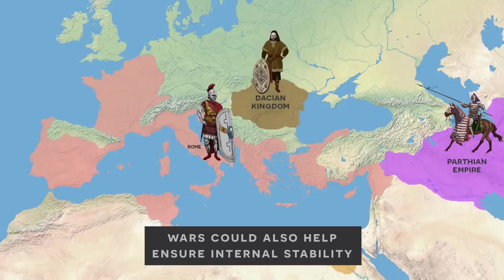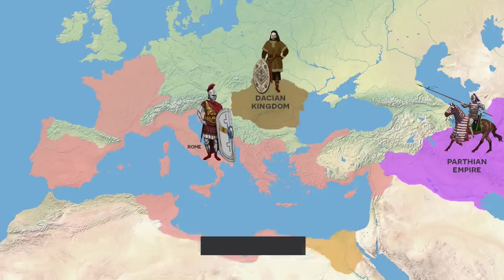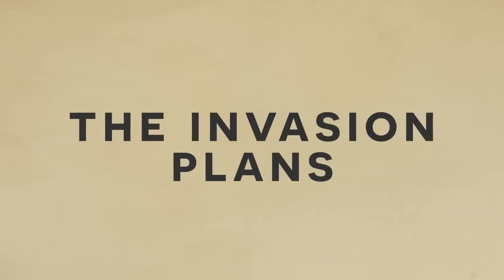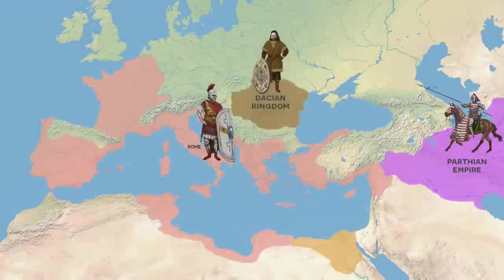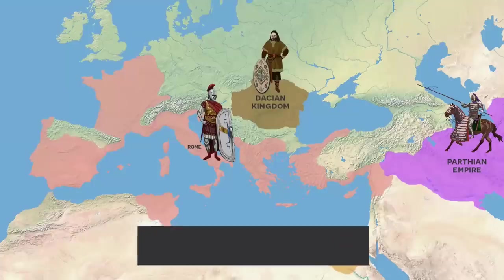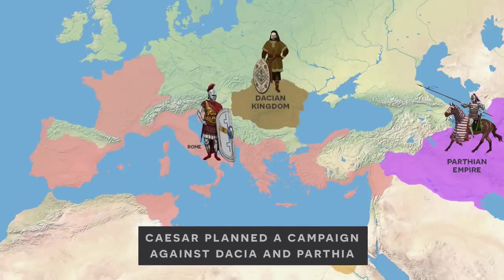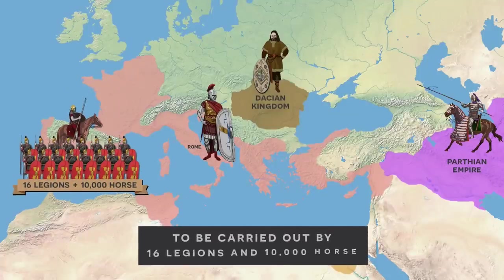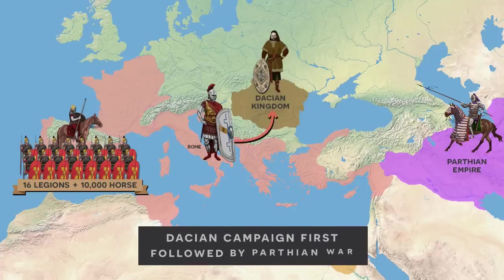With this context in mind, let's now proceed to the invasion plan. The outlines of the invasion plan that survive today are a combination of excerpts from ancient sources. Basically, Appian tells us that Caesar planned a campaign against the Getae of Dacia and the Parthians, which would be carried out by 16 legions and 10,000 horse. Suetonius tells us that the Dacians would be dealt with first, and then the Parthians, with an approach being undertaken through Armenia with the intention of a cautious advance.